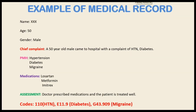Here is an example patient medical record: patient name XXX, age 50, gender male. A 50-year-old male came to the hospital with complaints of hypertension and diabetes. PMH (past medical history) includes hypertension, diabetes, and migraine. Medications were prescribed by the doctor, the patient was treated well, and codes were assigned for hypertension.